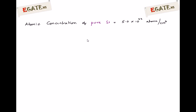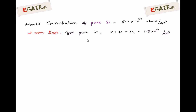First, the atomic concentration of pure silicon is 5×10²² atoms per centimeter cube. At room temperature, for a pure semiconductor, the intrinsic carrier concentration is given as 1.5×10¹⁰ per centimeter cube.